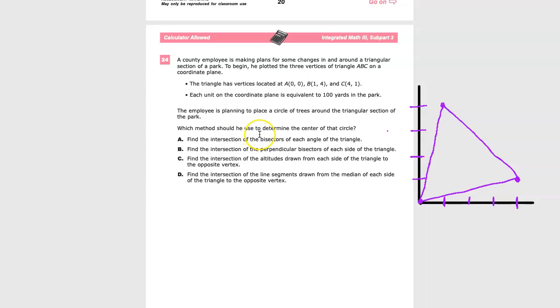Which method should he use to determine the center of the circle? Find the intersection of the bisectors of each angle of the triangle. See, this is an angle bisector question, so probably not. Find the intersection of the perpendicular bisectors of each side of the triangle. That's looking pretty good.